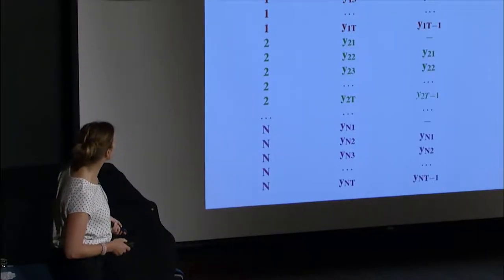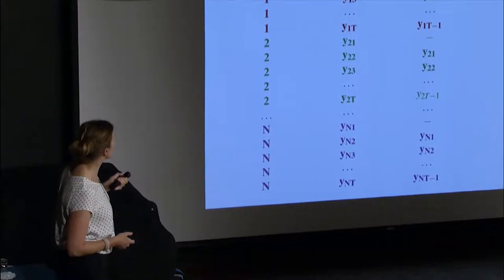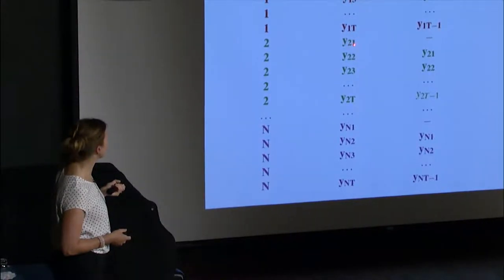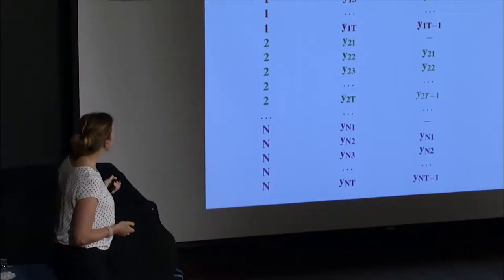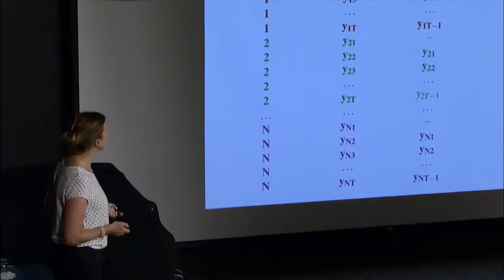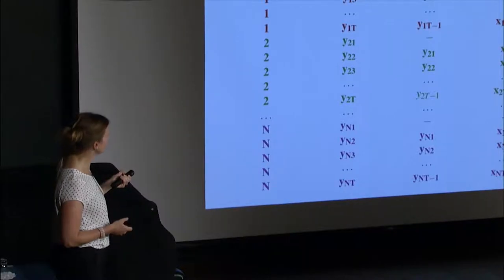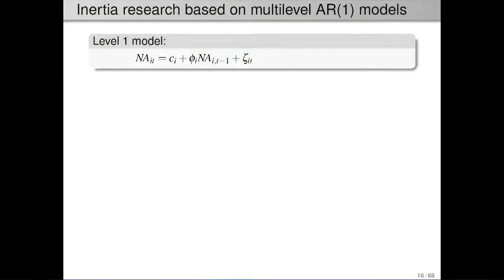This would be your data in long format. Then what you could do is create the lagged predictor using SPSS, R, or whatever program you are using — make a lagged version of this variable so we have today's score with yesterday's score for person 1 and person 2. You have to make sure that you set this to missing when switching from one person to another, otherwise you would be regressing person 2's score at the first occasion on the last score of person 1.